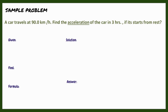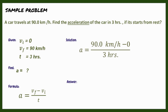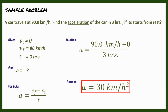The given are: final velocity = 90.0 km/h, initial velocity = 0 (since it starts from rest), and time = 3 hours. The unknown is the acceleration. The formula is A = (V_F − V_I) / t. For the solution: A = (90 km/h − 0) / 3 h = 90 km/h / 3 h = 30 km/h².